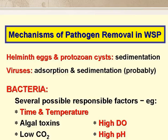Viruses also adsorb onto algae — we know this from scanning electron micrographs — and so they will settle with the algae as these algae die. With bacteria, there are several candidate removal mechanisms. Firstly, there's time and temperature: whatever bacteria are going to do — grow or die — they do it more quickly at higher temperatures, and they require more time at lower temperatures. Secondly, some algae excrete toxins which can kill faecal bacteria. Thirdly, ponds are low in carbon dioxide and high in dissolved oxygen, which is the exact opposite of their natural habitat, the gut. And then there's high pH — values above 9, even above 10, occur in ponds as a result of algal activity.